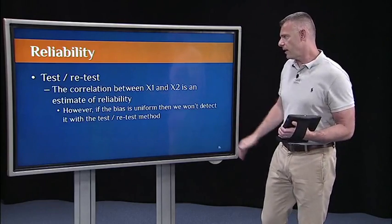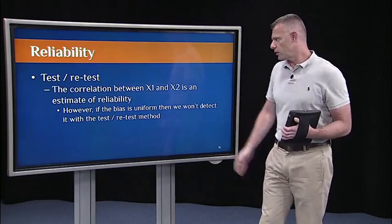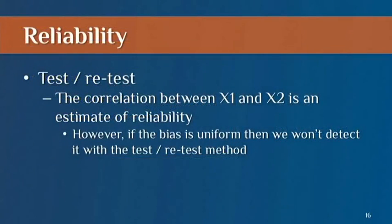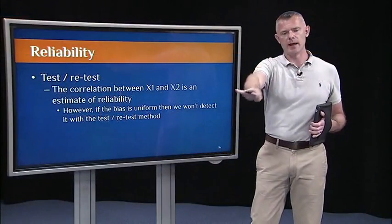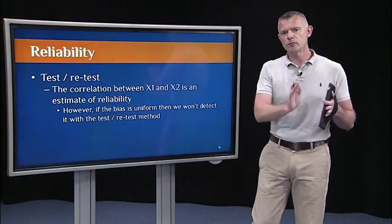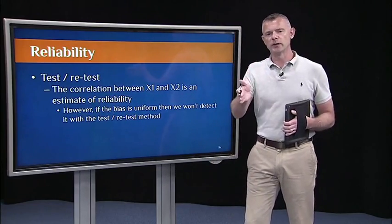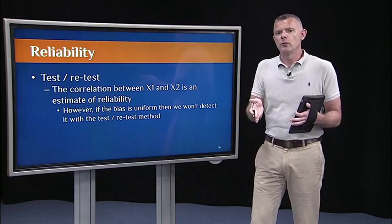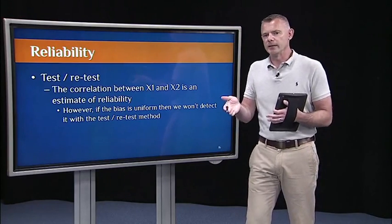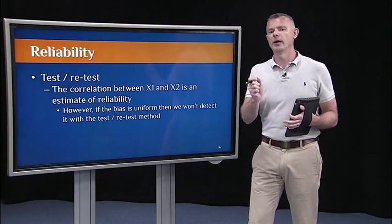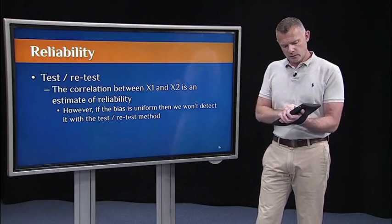So this test-retest method, we just look at the correlation between X1 and X2. The only problem with the test-retest method is it wouldn't detect the bias, the systematic bias, in the instrument. So if we use the infrared meter on everybody in a classroom once, I did it on everybody in the classroom again a couple of hours later, and the correlation was really high. If I only looked at the correlation, it wouldn't tell me about the bias. I would have to look at the histogram, I would have to look at the mean of the sample.